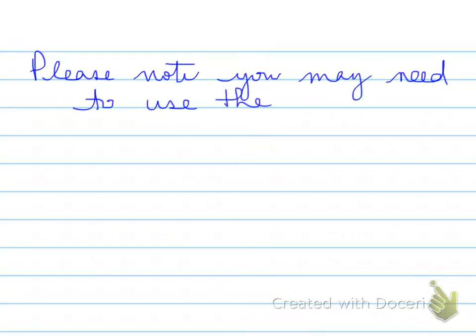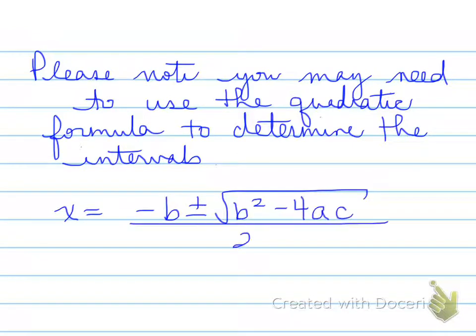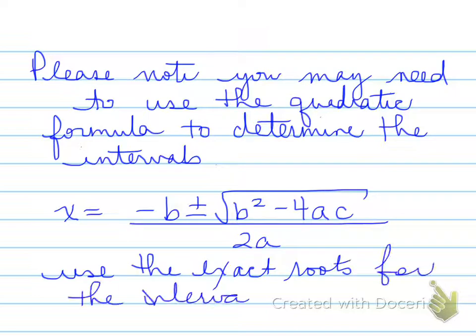Remember to please note that you may need to use the quadratic formula, as I mentioned earlier, to determine the intervals. Here is your quadratic formula. Negative B plus or minus the square root of B squared minus 4AC all over 2A. This quadratic formula will yield us exact roots, which we must use for the intervals. Use the exact roots and not the decimals for the intervals. We can use the decimal to approximate a test point, but please do use the exact roots for your intervals. That's the end of the video. Take care.